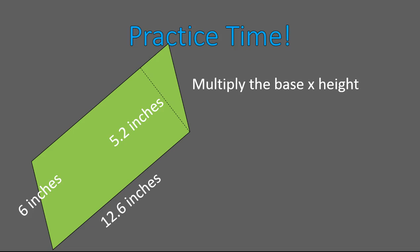All right. Are you back? Wonderful. We are multiplying the base times the height. In this case, it's 12.6 is our base, and our height is 5.2. When we multiply those together,